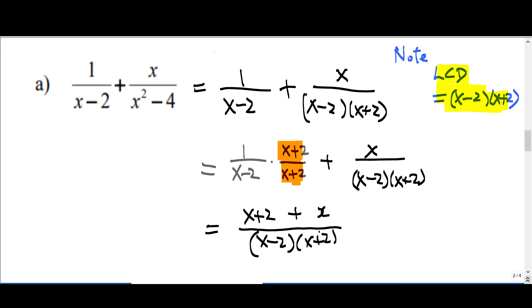When you multiply the numerator and denominator, you get x plus 2 here. This is how you get the first term after multiplying. The second term stays as x.